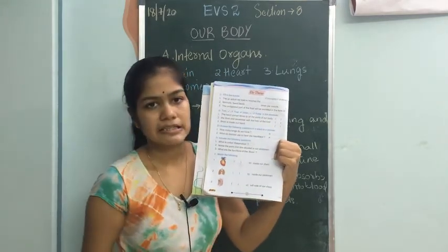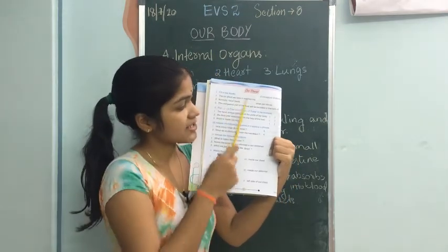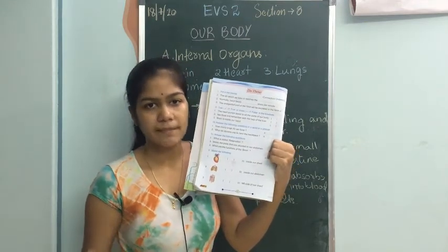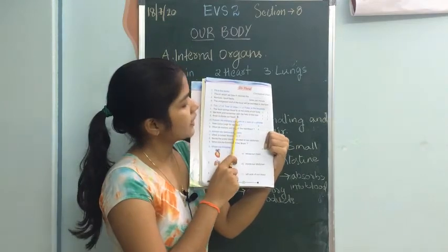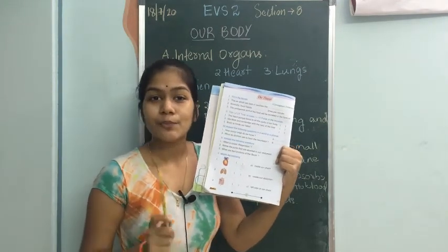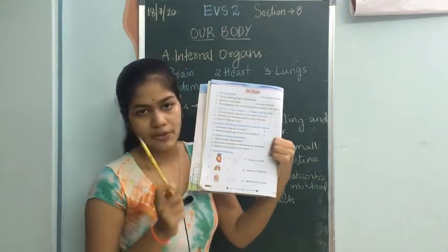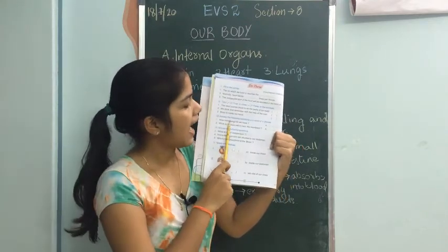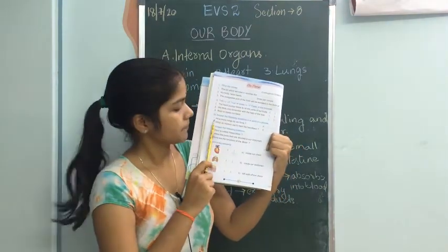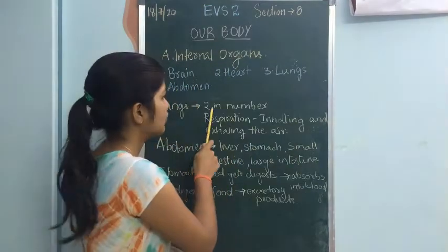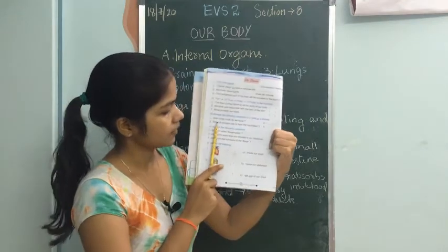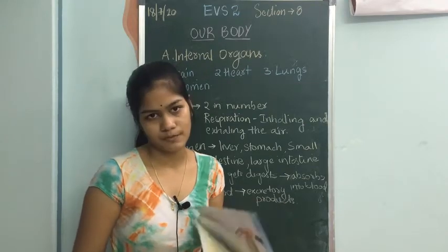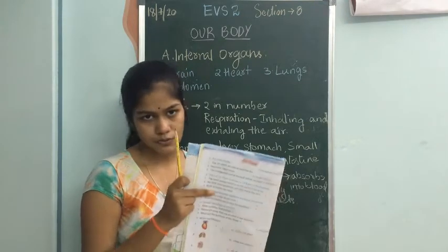True or false: Heart pumps blood to all parts of the body — True, the heart is the organ that pumps blood to all other parts. We think and remember with the help of the liver — False, it is the brain that helps in thinking and remembering. Brain is inside our head — True. How many lungs do we have? Two lungs. What do doctors use to hear the heartbeat? The stethoscope.